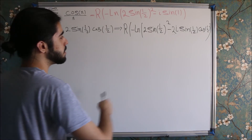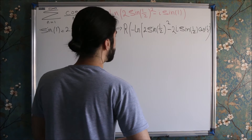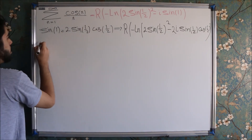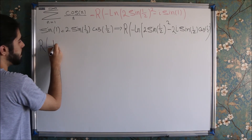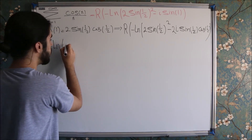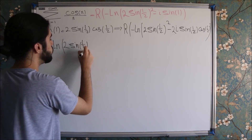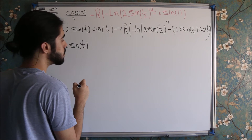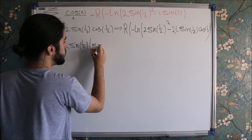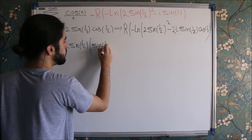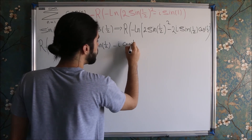So we can factor, and we will get the real part of minus ln of 2 times sine of 1 over 2, times the quantity sine of 1 over 2 minus i times cosine of 1 over 2.